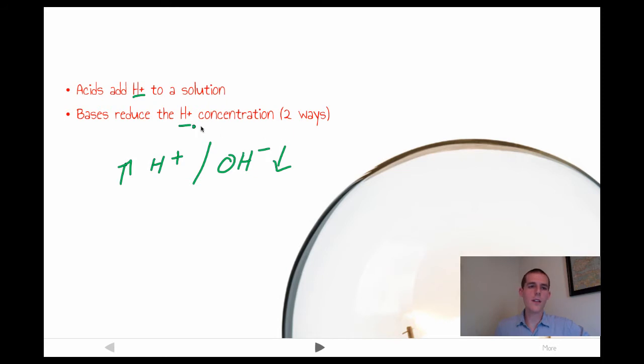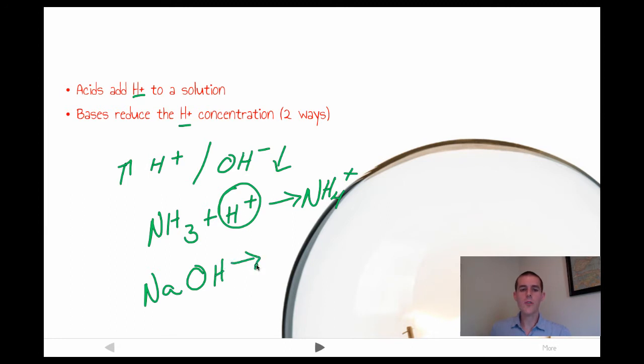There are two ways bases reduce the H+ concentration. The first one is to directly hook up with that H+. A good example of this is ammonia, which is NH3. If you put NH3 into a solution, it will combine with that H+ and give you ammonium ion, which is NH4+. So it effectively pulled this hydrogen right here out of the solution and made our solution less acidic. The other way it can do this is by dissociation. Let's take sodium hydroxide. If that's put into water, this is going to break up into Na+, sodium, and our hydroxide ion.